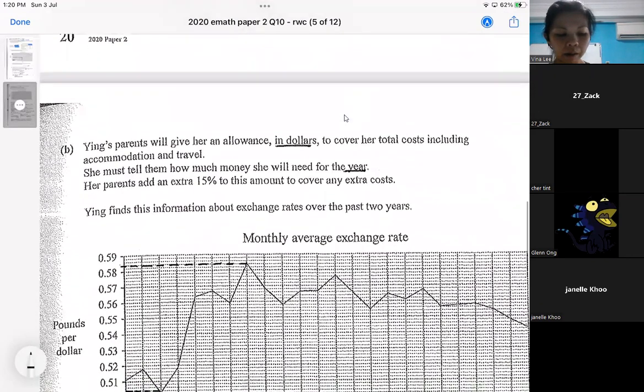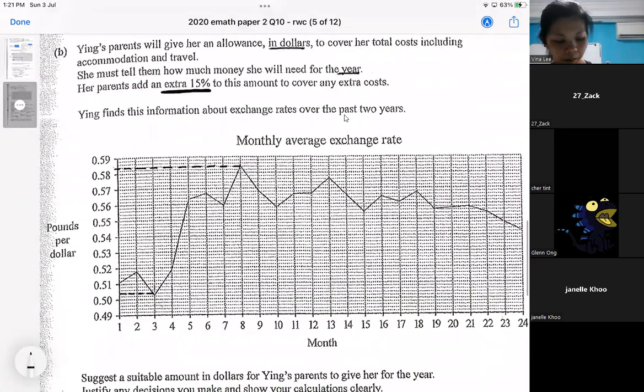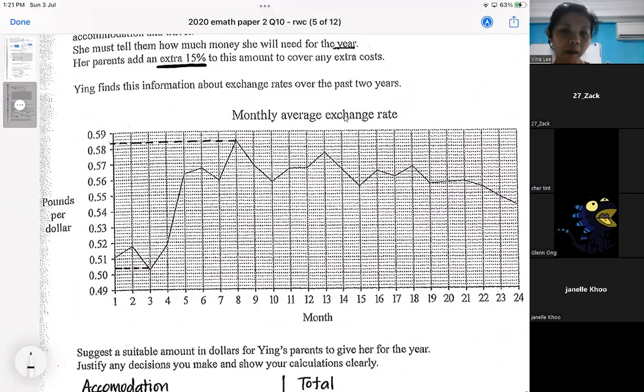So she has to tell her parents to give her an allowance in Singapore dollar. Her parents live in Singapore, so her parents will be paying her in Singapore dollar. So make sure her cost of accommodation, travel is covered. And then her parents also want to add an extra 15%. So some of you may not have read this part. That means this 15% is just like extra money, just to play safe. You know, sometimes you overspend a little bit. So she needs to tell her parents how much she needs for the year. So this one looks quite easy, but you got to be careful.